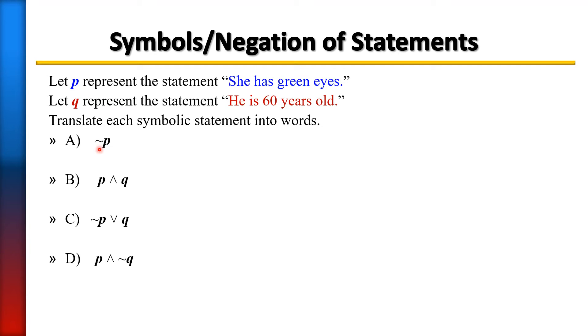In this first example, this is NOT P. Anytime you see that little tilde in front of P, that means NOT. So if P is 'She has green eyes,' to negate that would be 'She does not have green eyes.'